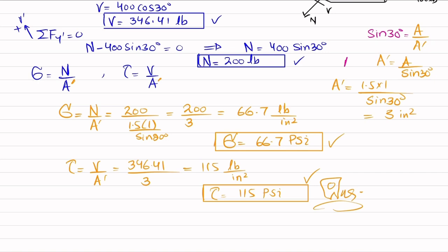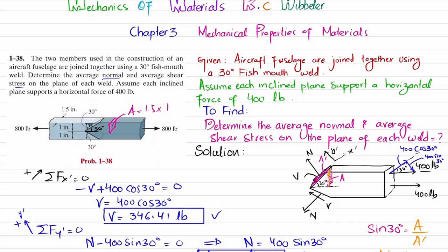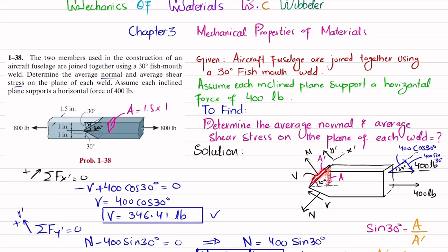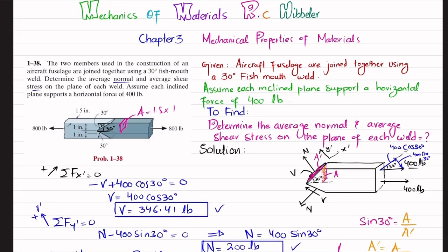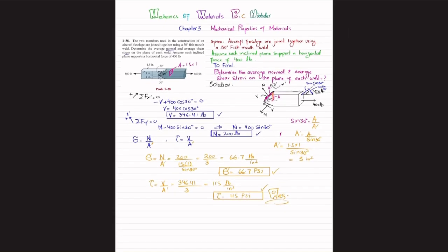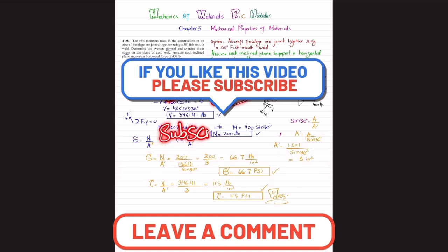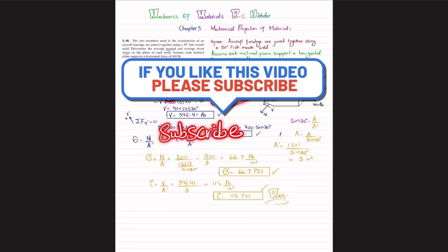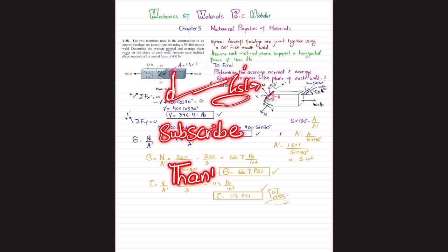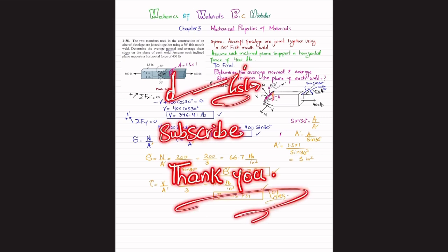These are the answers: the average normal stress is 66.7 psi and the average shear stress is 115 psi on each of these inclined planes. The same normal force and shear force act on both inclined planes. That was all about problem 1-38. I hope you enjoyed this video. If you're new to my channel, please subscribe and press the bell icon for notifications. If you have any questions, ask in the comment section — thank you for watching.